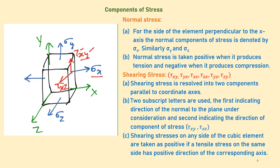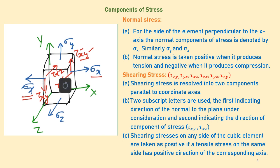Now let me also show you the normal stress on the opposite face of the cube. This is also notated as sigma x, and even this is positive because it tries to expand the cube. Let me also show you the shearing stresses on this face: this is tau x-y and this is tau x-z. Now these two are negative because sigma x is in the negative x-direction of the cube.